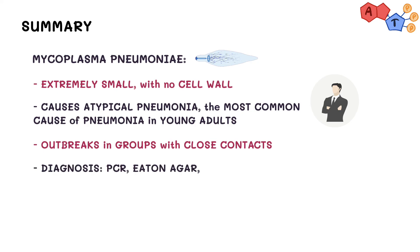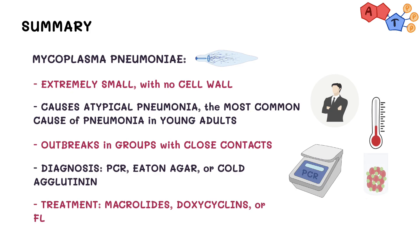It can be identified with PCR, culturing on Eaton agar, and high serum titer of cold agglutinins. Treatment choices include macrolides, doxycycline, or fluoroquinolone. Penicillins and cephalosporins are ineffective. Why? Because mycoplasma does not have a cell wall.